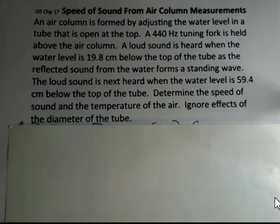In perhaps a lab situation, this air column is formed by adjusting water level in a tube that's open at the top. There's a tuning fork held at the top, 440 hertz, and when the water's at a proper position, the reflected sound wave from the water will set up a standing wave. You'll hear a loud sound when the water's in the proper position. There's a proper length of air column from the top of the tube down to the water level.